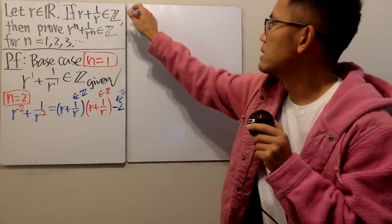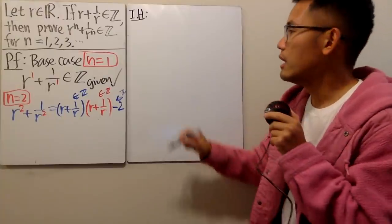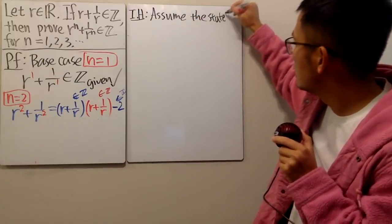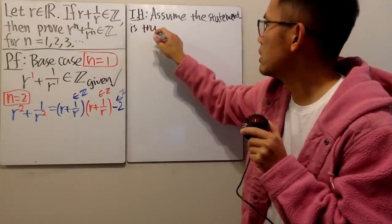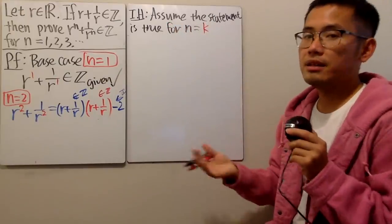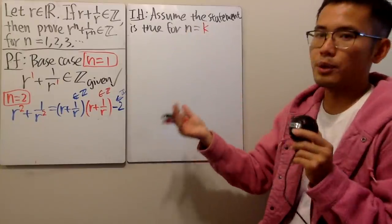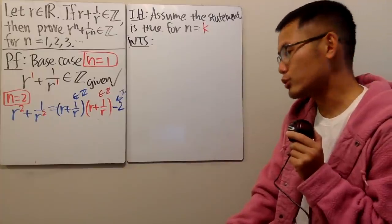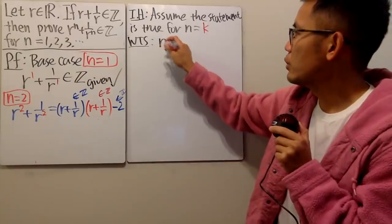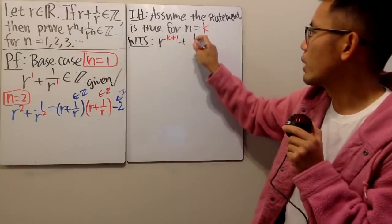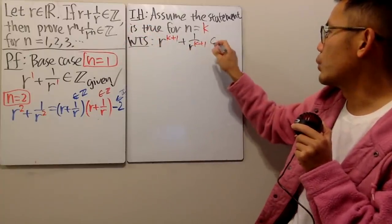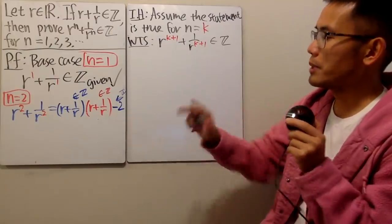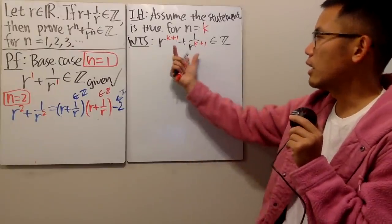After the base case, we do the inductive hypothesis — IH. Assume the statement is true for n equal to 1, 2, 3, up to k. Then, want to show — WTS — that the statement is true for k plus 1, namely that r to the k plus 1 plus 1 over r to the k plus 1 is an integer. We will have to do things like that earlier to break it apart and argue that each part is an integer so that we can argue this also has to be an integer.